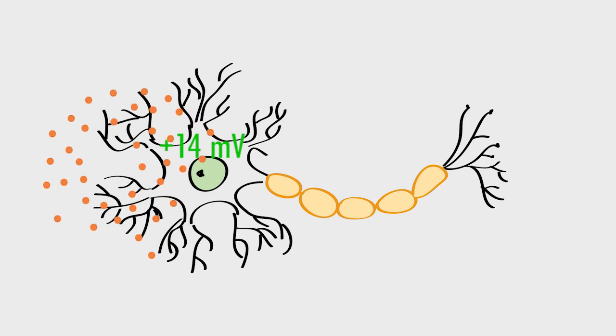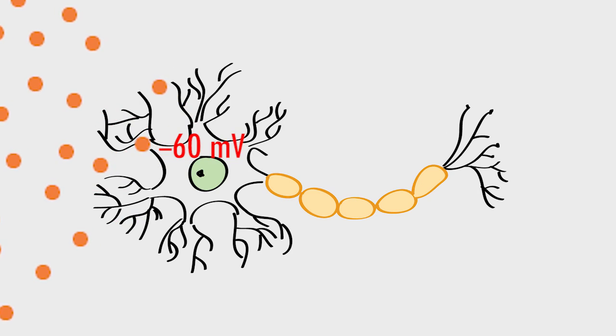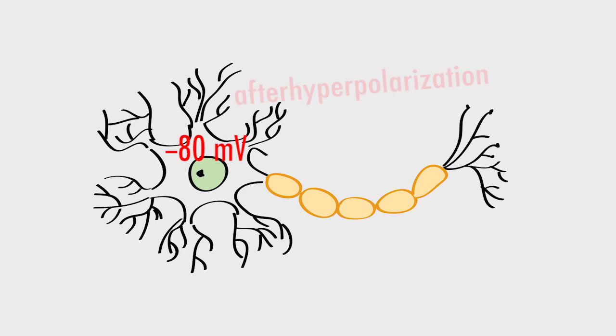When all of these positive potassiums rush out of the cell, the cell membrane potential then comes back down towards the resting potential. However, so much potassium gets through the open channels that the potential actually runs past the resting potential down to negative 75 or negative 80 millivolts. This brief period is called an after-hyperpolarization because it happens just after the action potential.